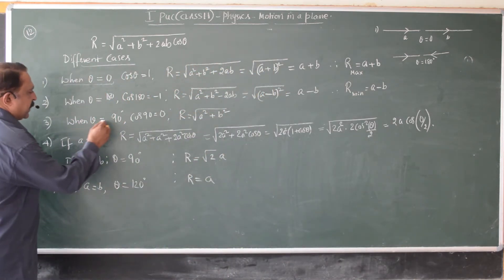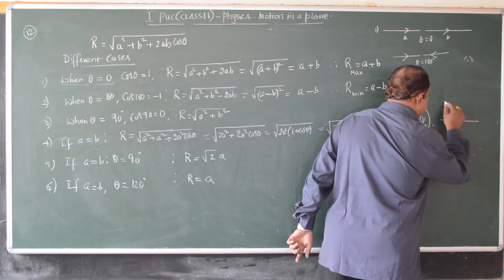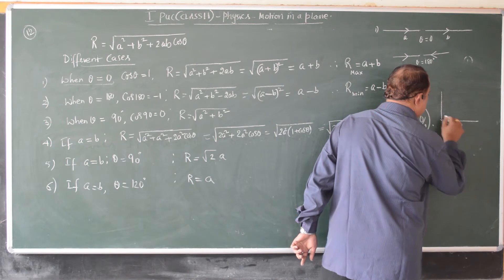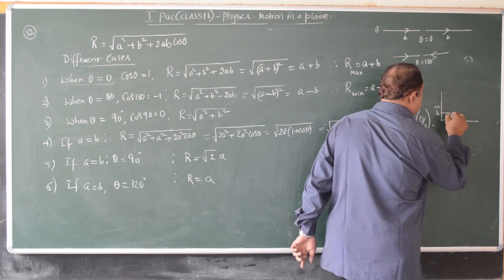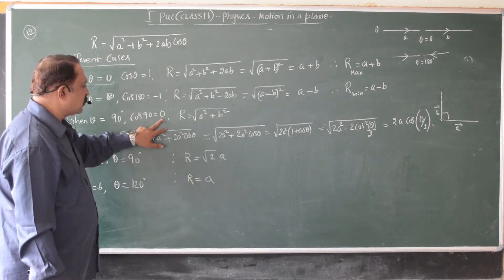When theta is 90 degree, that means if the two forces or two vectors are positioned at 90 degree, then the value of cos 90 is zero.